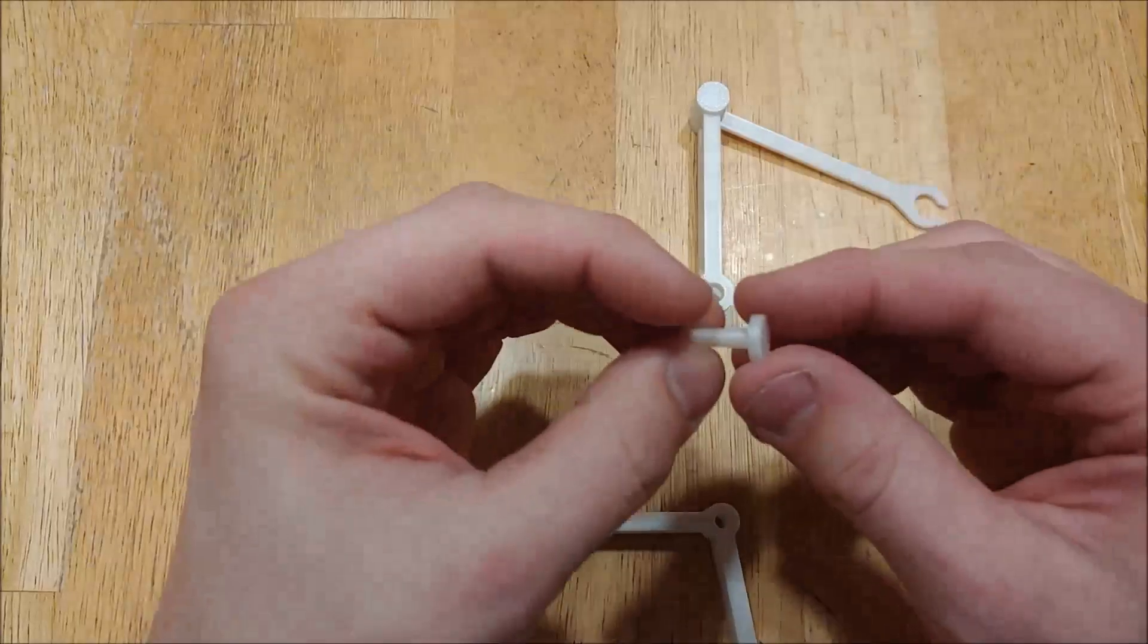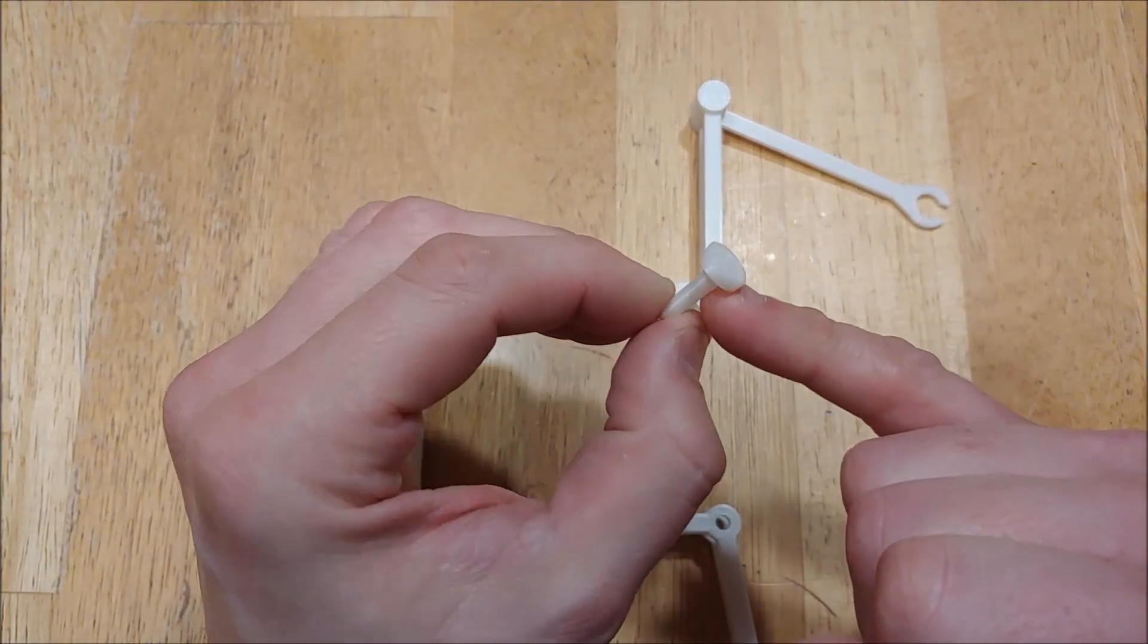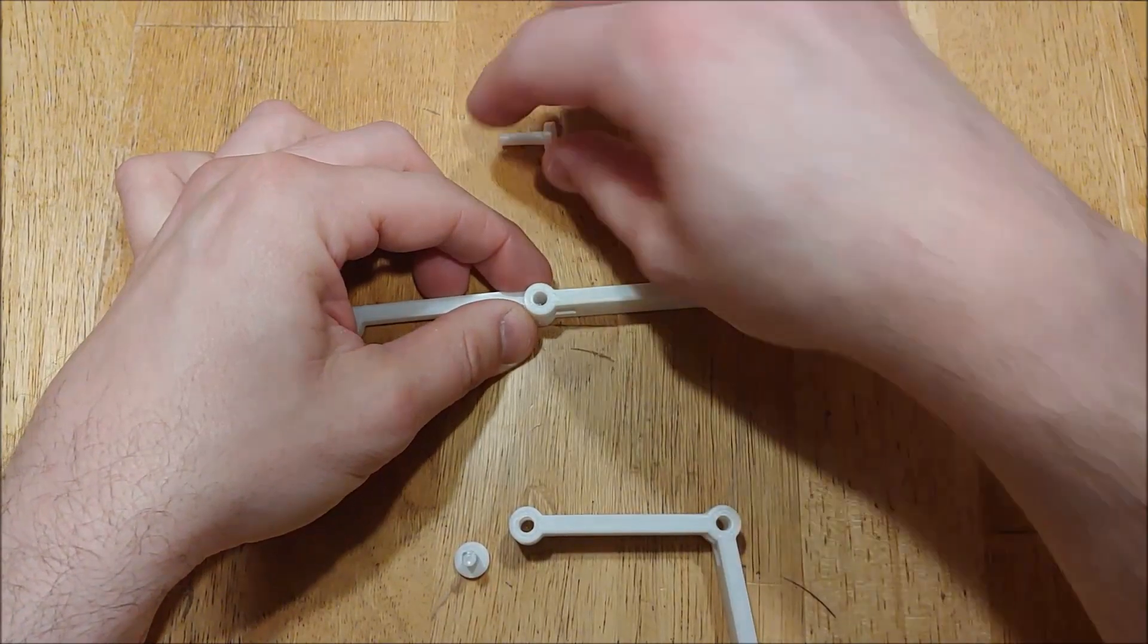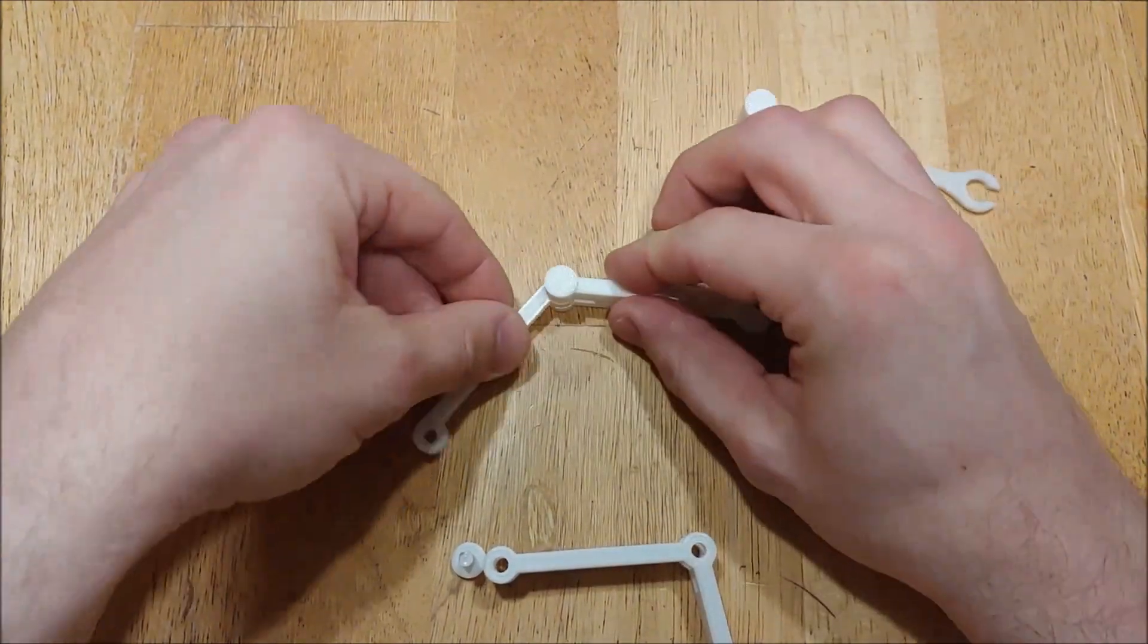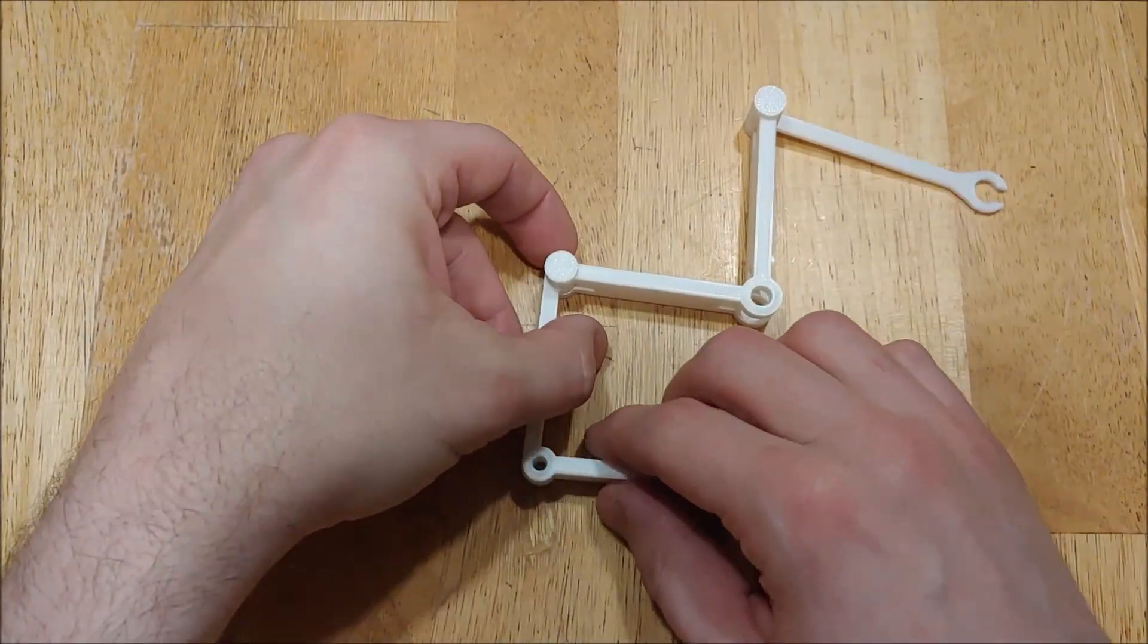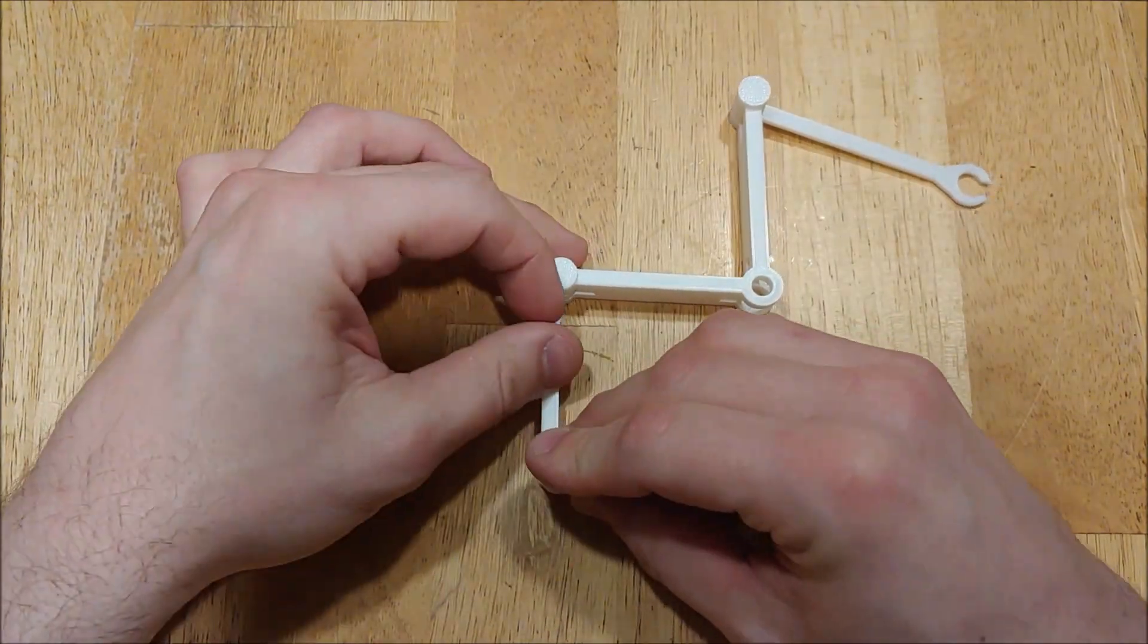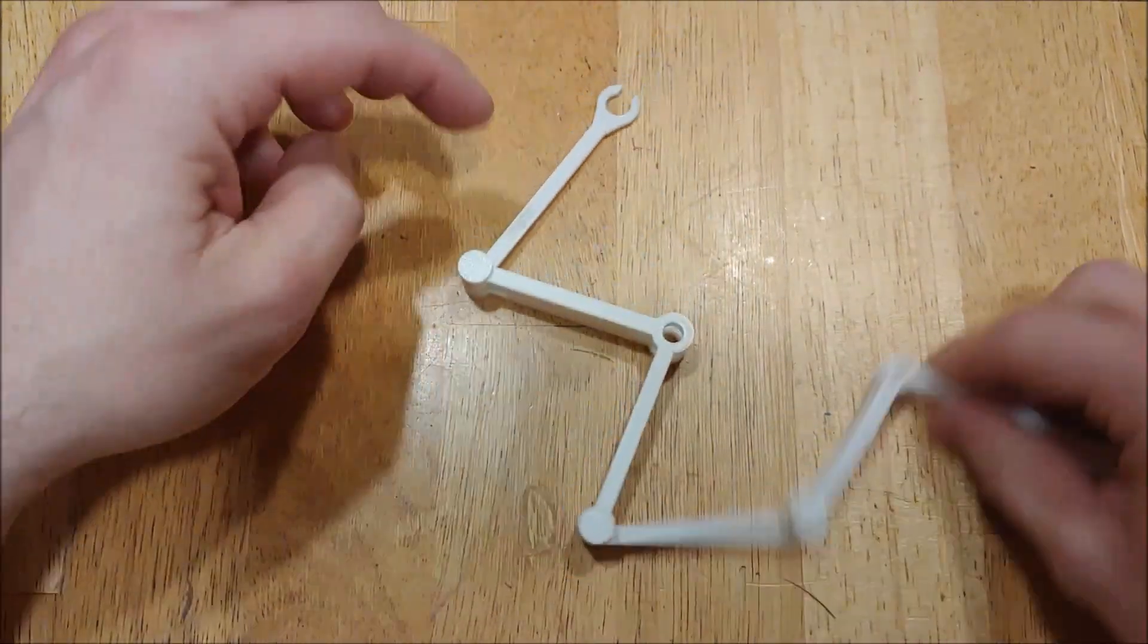Now it does snap in and it should move very freely like so. The reason why it snaps in is because there is a little bit of a thicker spot on there. So it has high friction. This piece actually doesn't matter which way you put it because it's symmetrical. Satisfying snap, there it is.